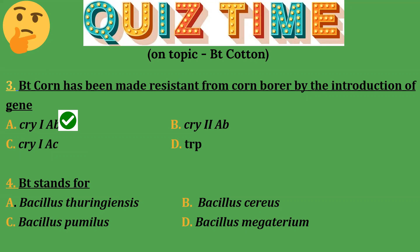Question 4: BT stands for — Option A: Bacillus thuringiensis; Option B: Bacillus cereus; Option C: Bacillus pumilus; Option D: Bacillus megaterium. The correct answer is Option A — Bacillus thuringiensis.